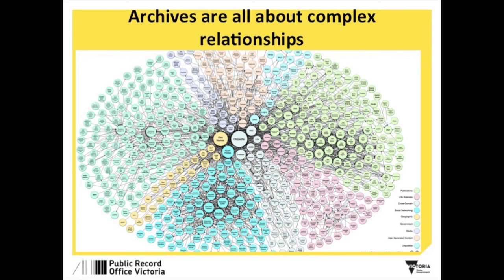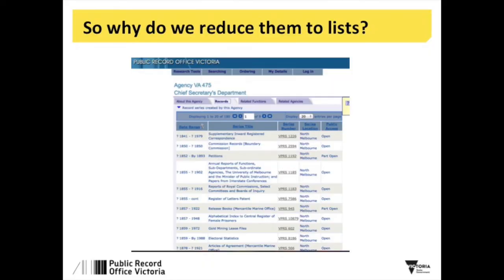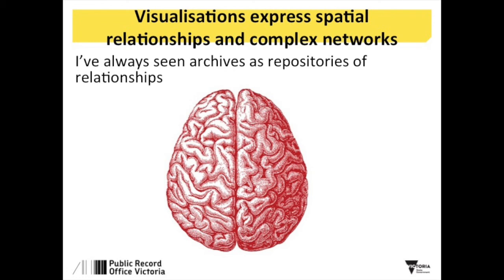Apologies for Charlie not being here - he's not well, so I'll try to give you some idea of his slides. We're really just going to talk about the journey today and a bit of the technology behind it, and a quick demo. I'm not an archivist, but I've always seen archives as repositories of complex relationships, especially when dealing with people's lives, stories, and interactions between people and government. It's always occurred to me - because I think spatially and in pictures - why do we reduce these complex relationships to lists which give you no idea of the relationships? They're just lists of entities such as functions, series, and agencies.